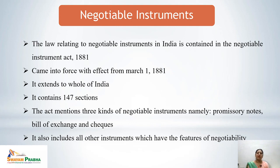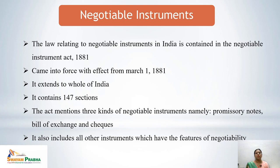The law known as the Negotiable Instruments Act 1881 relates to negotiable instruments in India. The Act came into force on 1st March 1881 and extends to the whole of India including Jammu and Kashmir. It contains a total of 147 sections with different definitions and provisions. The Act covers three types of negotiable instruments: promissory notes, bills of exchange, and cheques. Other instruments with features of negotiability can also be treated under the Act.